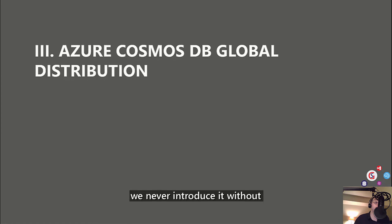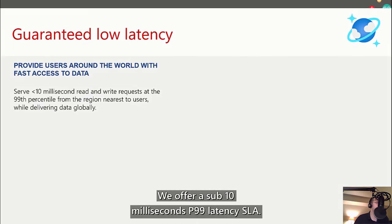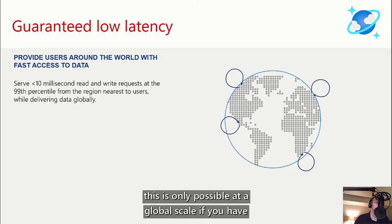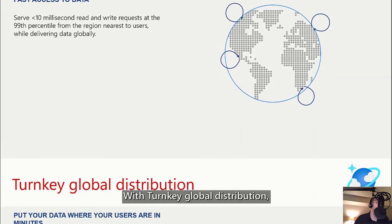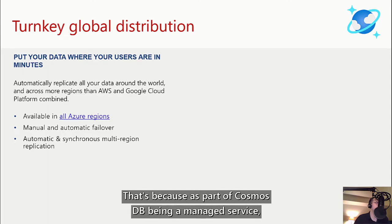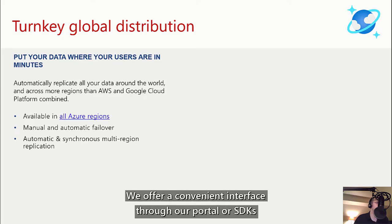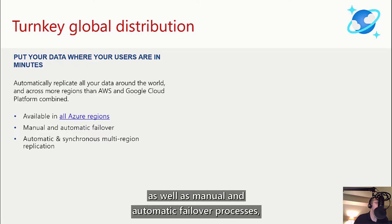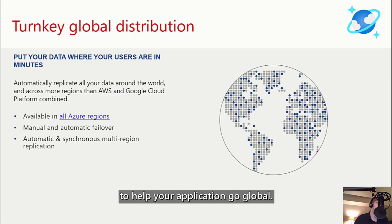When we introduce Azure Cosmos DB, we never introduce it without mentioning that it's globally distributed, because global distribution is critical to our SLAs and promised service. We offer a sub-10-millisecond P99 latency SLA. With speed of light delays, this is only possible at global scale if you have the kind of global data center network that Azure has, to guarantee that we are where your users are. With turnkey global distribution, you can put your data where your users are in minutes — Cosmos automatically replicates all your data around the world, across more regions than AWS and Google Cloud Platform combined.